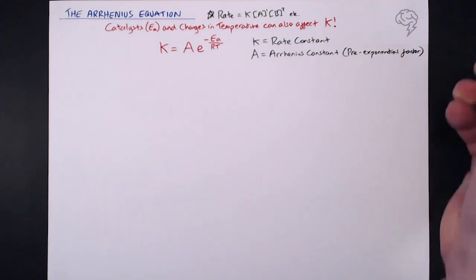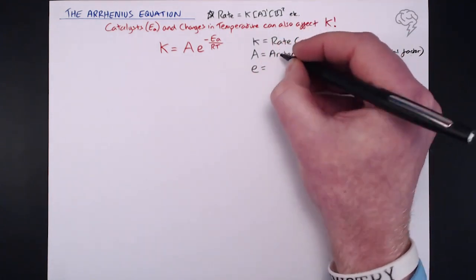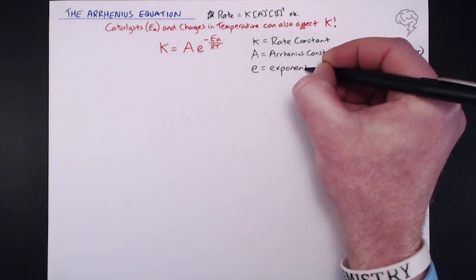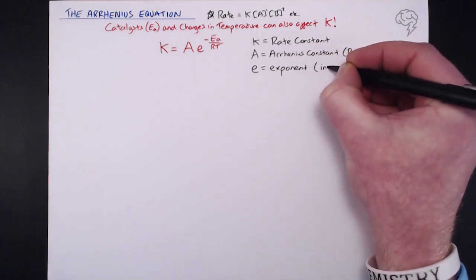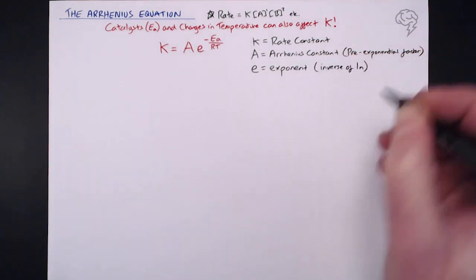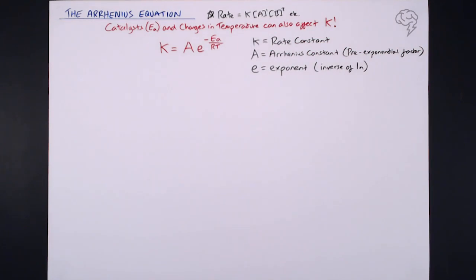The little e that we've got there is the exponential factor, or the exponent. Basically it's the inverse of natural log on your calculator — you'll see LN on your calculator; it's shift LN, and that's the little e. I'll come to the reason we've got this in a second, but first let me deal with Ea and RT.